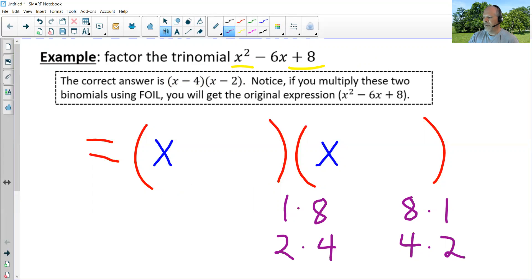So far we've done first times first, x times x, that gave us x squared. We can do last times last to come up with eight, but we have choices and the way you can tell which one is right is by doing the O and the I in FOIL. If you do the outside and the inside and combine them together, that will tell you whether you use two times four or one times eight. So for example, let's just pick one and eight and see what happens.